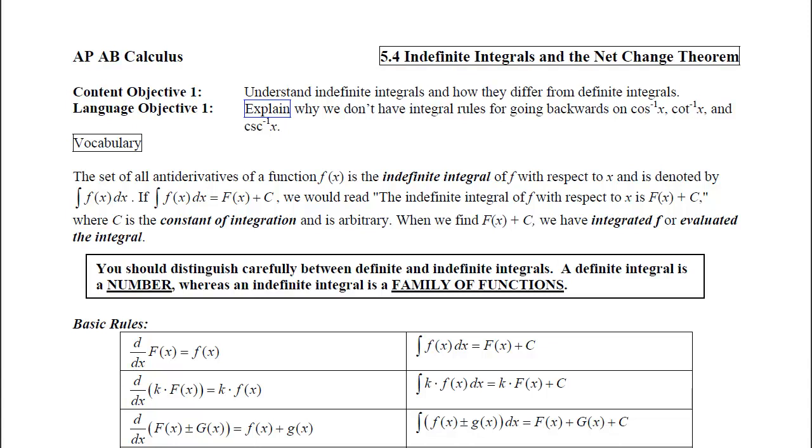This is section 5-4, Indefinite Integrals and the Net Change Theorem. Our first objective is to understand indefinite integrals and how they differ from definite integrals. When we're done, I'd like you to be able to explain why we don't have integral rules for going backwards on inverse cosine, inverse cotangent, and inverse cosecant of x.